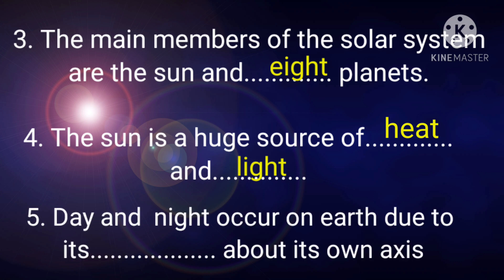Next is, day and night occur on earth due to its dash above its own axis. Answer is, rotation.